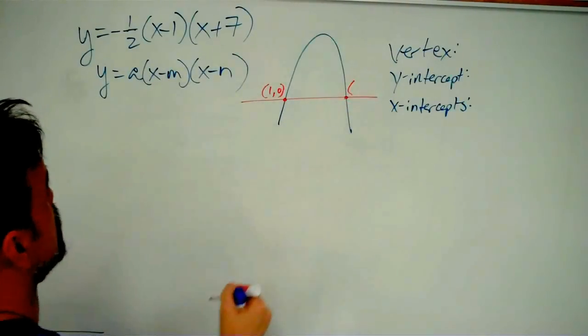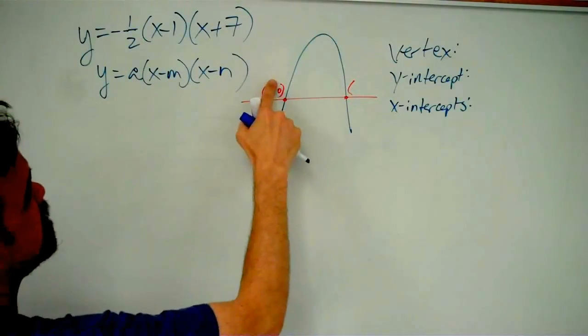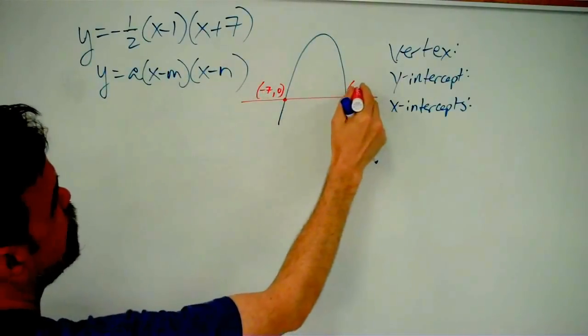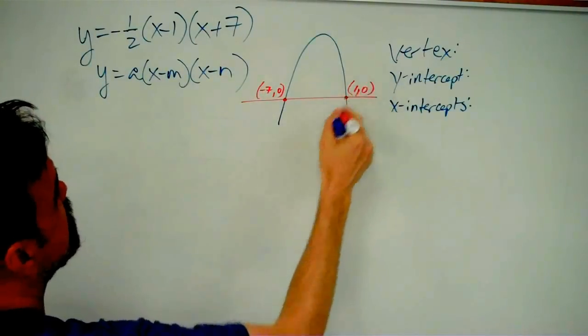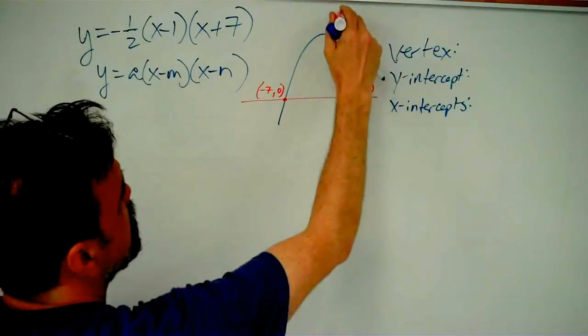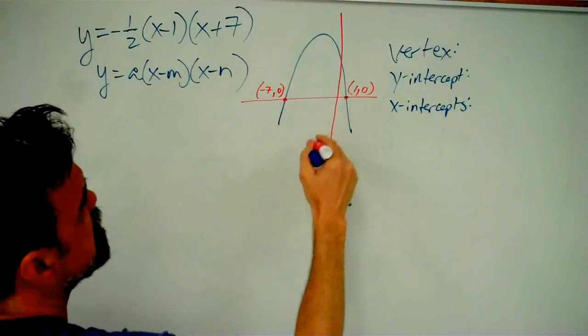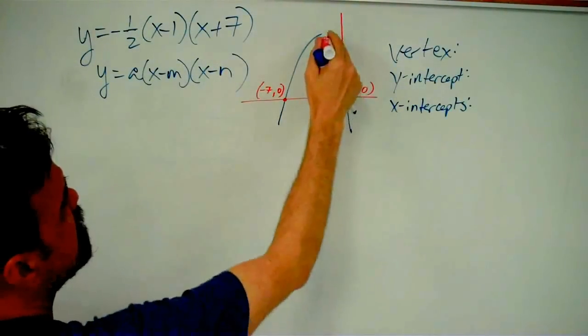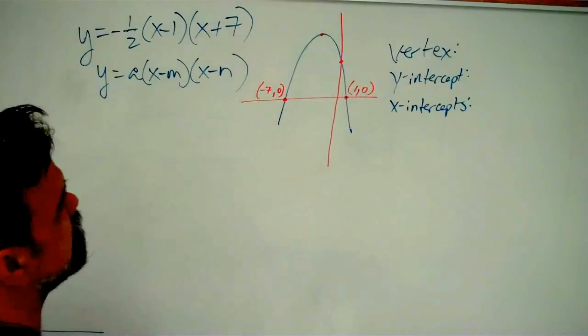So that means—sorry about this—negative seven is on the left, one is on the right. That looks a little better there. So I noticed that I went from negative to positive. That means my y-axis must be in there somewhere. And there is my y-intercept. And then here is my vertex.